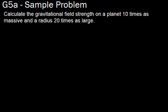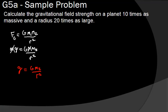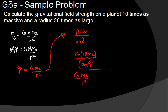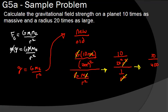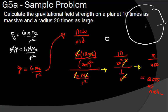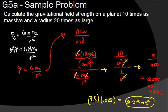Calculate the gravitational field strength on a planet 10 times as massive with a radius 20 times as large. Setting up the ratio: (G × 10M) / (20r)² over (G × M) / r² gives 10 / 400 = 0.025. Even though there's more mass, the radius is so large that the gravitational field strength is much, much less — 0.025 times the original, giving 0.245 m/s² acceleration.